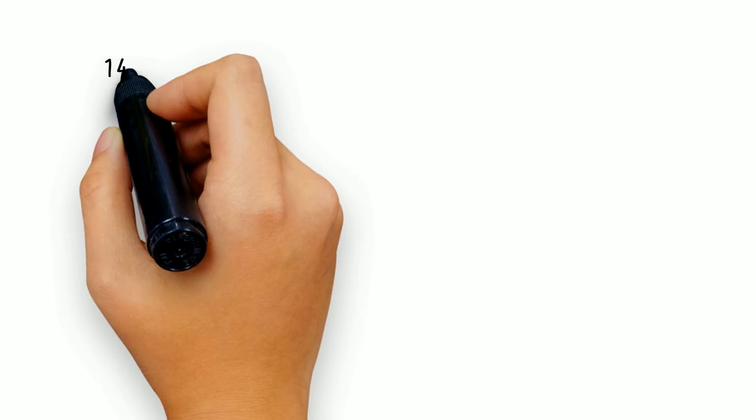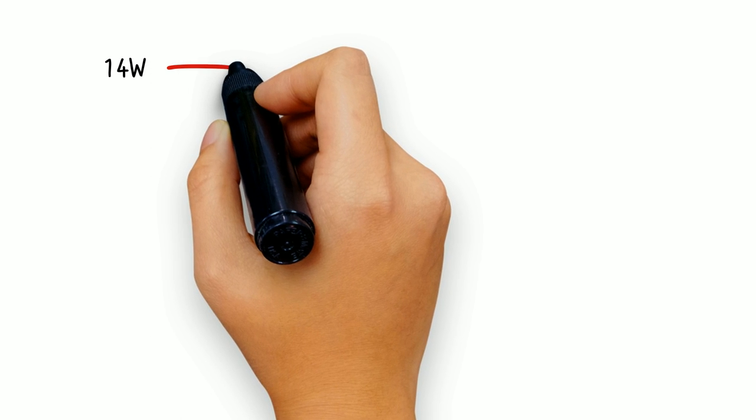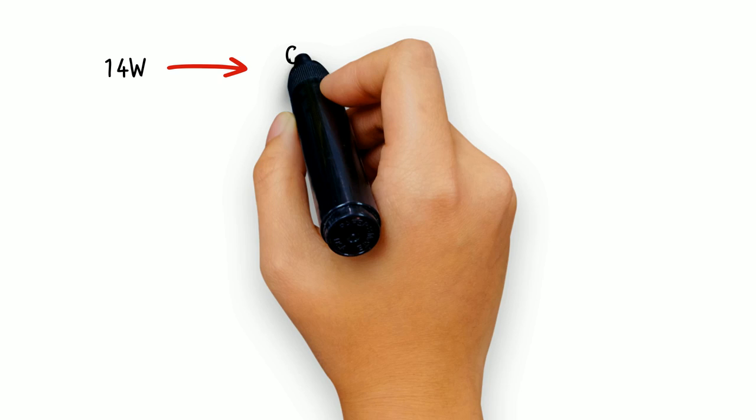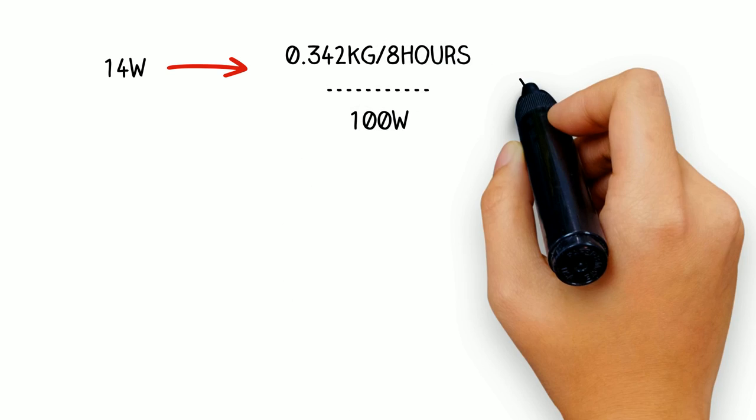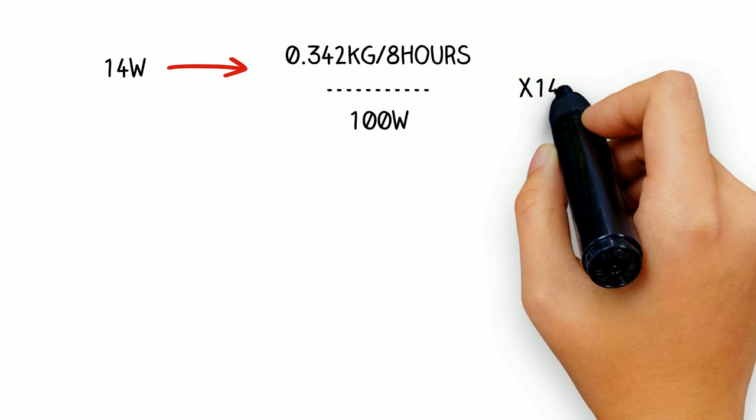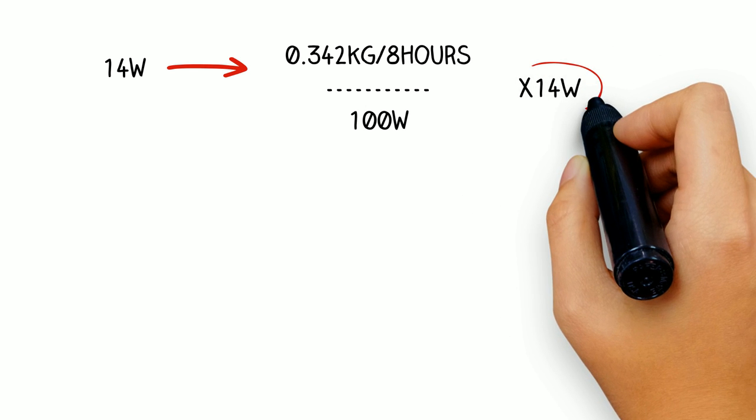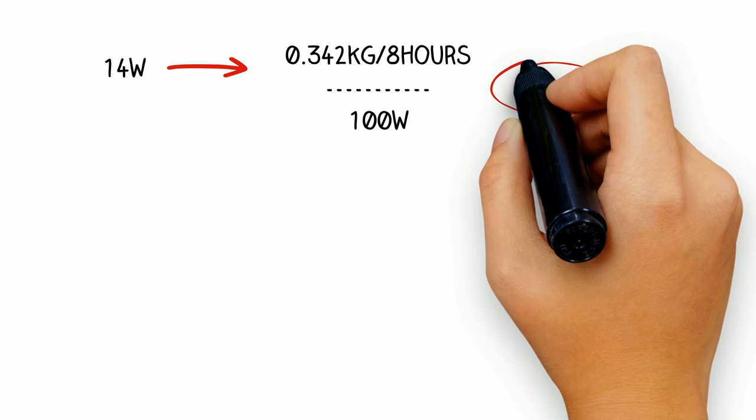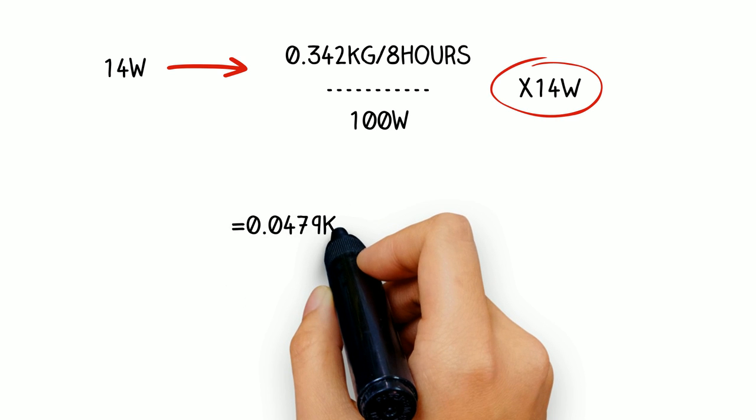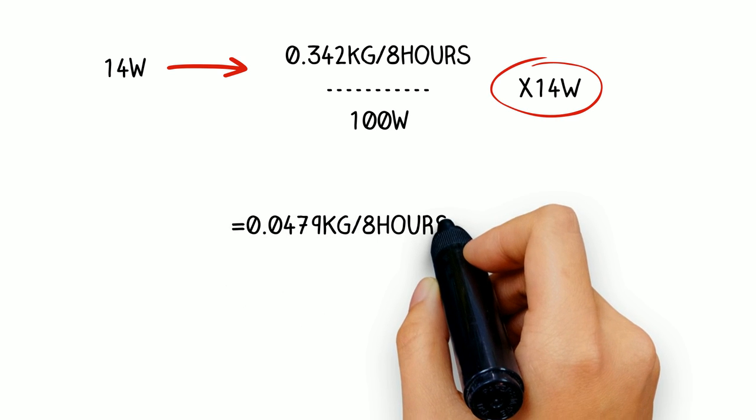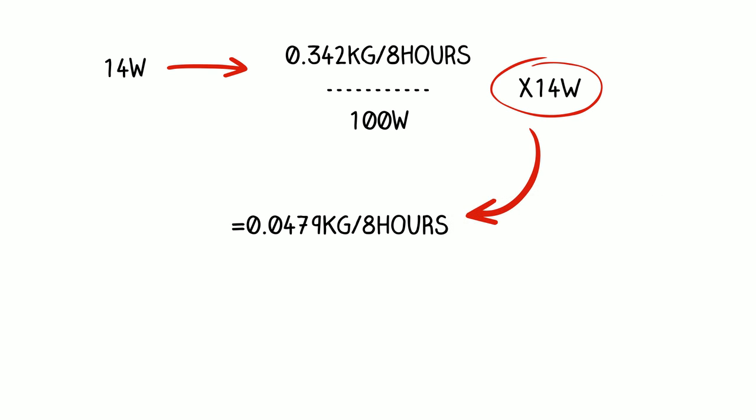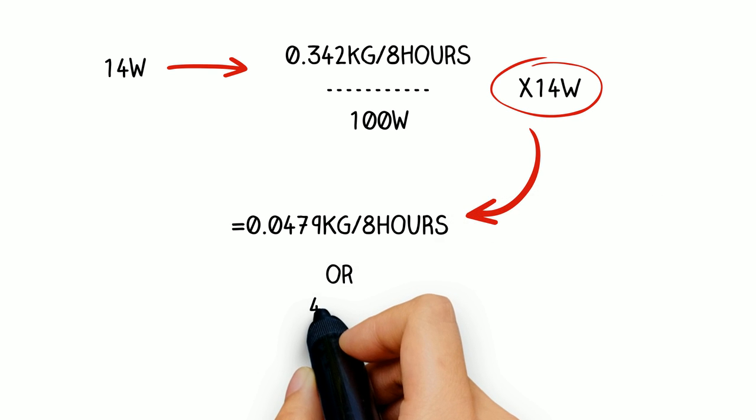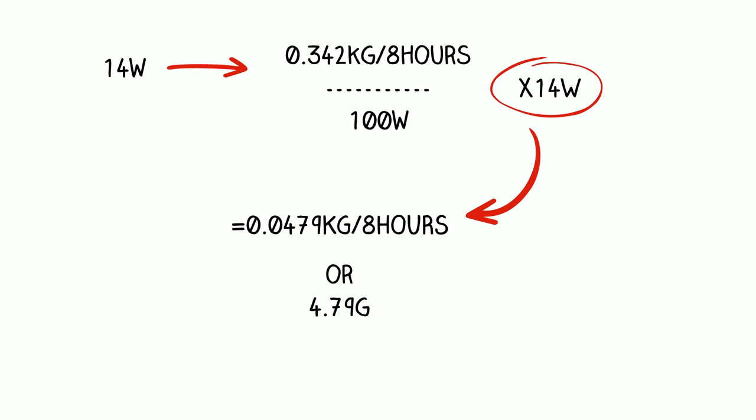So that is 342 grams per eight hours. So what does our 14-watt calorimeter actually use in eight hours? Well it's 0.342 kilograms for eight hours divided by the 100-watt load times the 14-watt load. And the answer is 0.0479 kilograms for eight hours, or 47 grams for eight hours of coal used to burn a 14-watt load.